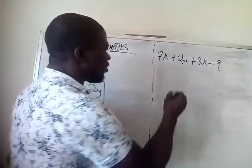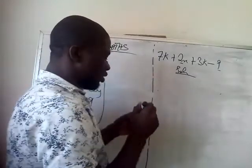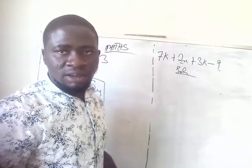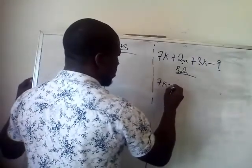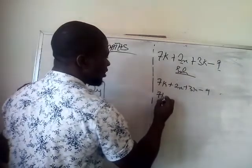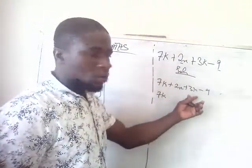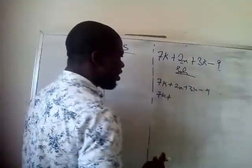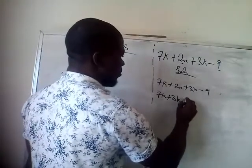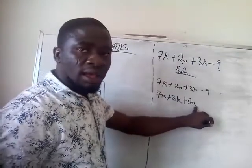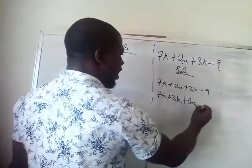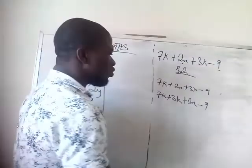If we are asked to simplify this expression, the first thing we do is collect like terms — the ones that have the same variable. We write: 7K plus 2X plus 3K minus 9. Then we collect like terms: 7K and 3K share the variable K. 2X stands alone — there is no other X term to add or subtract. And minus 9 also stands alone.